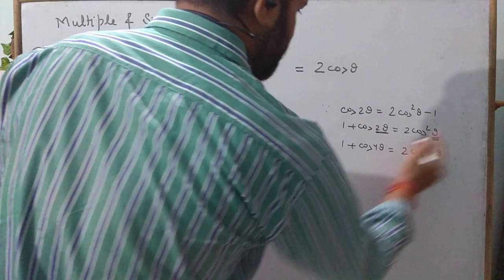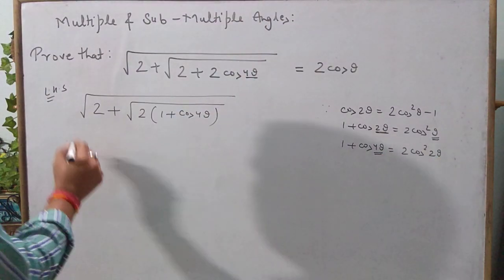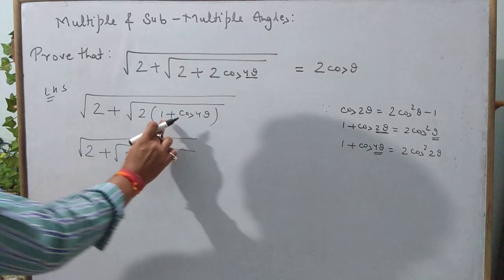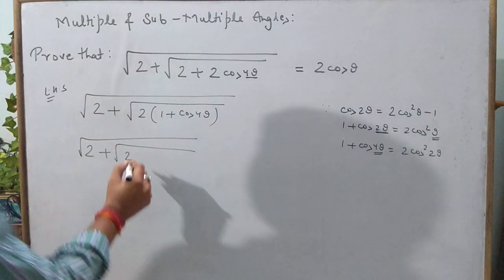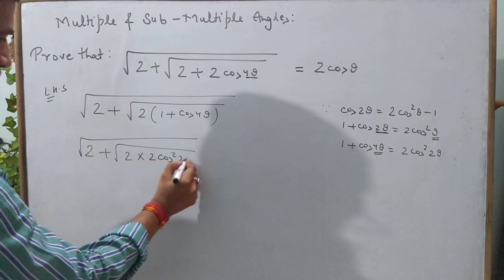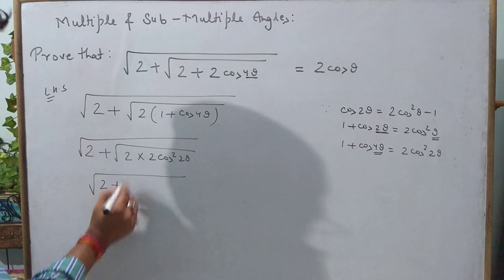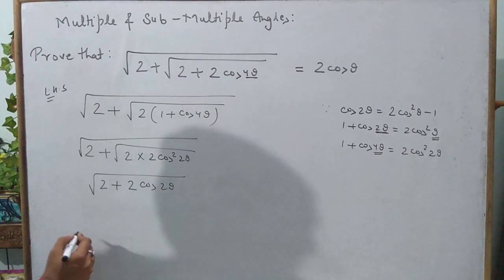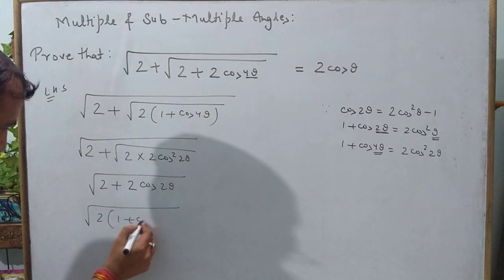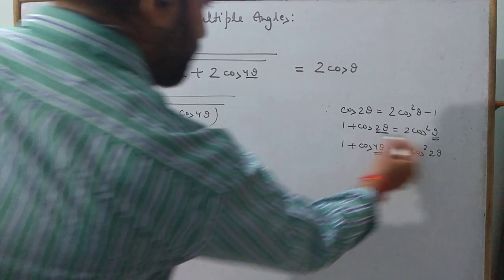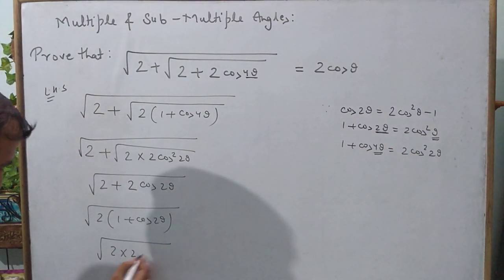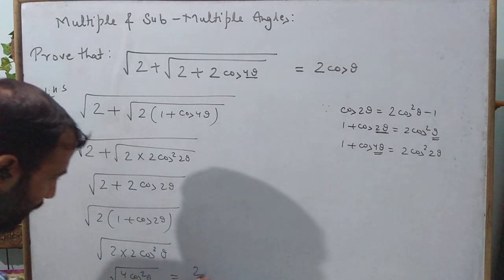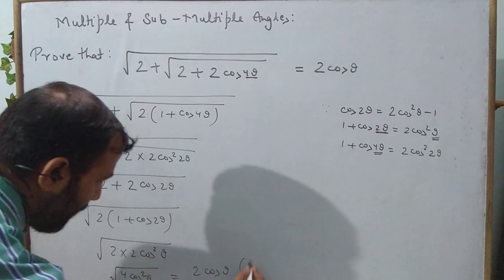When the angle is 4θ, the half angle is 2θ. So we get √(2 + √(4cos²2θ)) = √(2 + 2cos2θ). Again taking 2 common inside, we get √(2(1 + cos2θ)) = √(2 · 2cos²θ) = √(4cos²θ) = 2cosθ, which is the RHS.